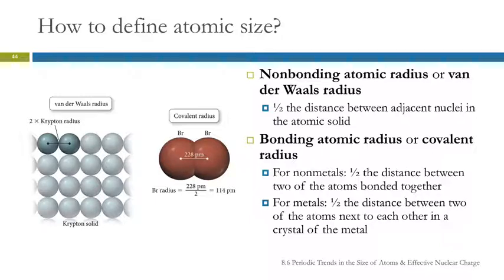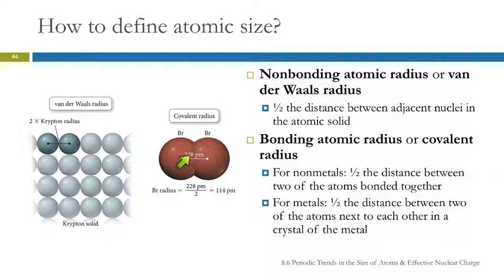For metals, which don't form covalent bonds, we're going to look at half the distance between two atoms in a crystal of the metal. For metals, that's going to be very similar to the van der Waals radius. When bromine atoms covalently bond together, their nuclei get closer than their van der Waals radius would suggest, so you don't get the same answer for all these different methods of measuring atomic size.